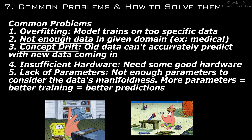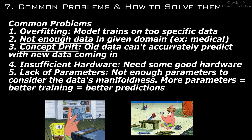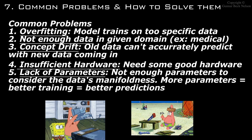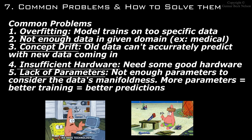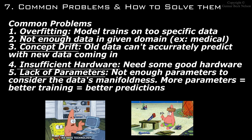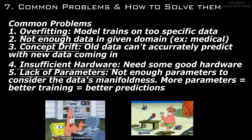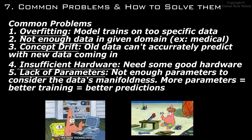Another aspect is the lack of parameters used to measure different heuristics that a neural network can predict. Typically, the higher the number of parameters a model has, the higher the accuracy and the more diverse outputs it can handle. The drawback is that it becomes more computationally expensive and takes longer to train — hence the linear relationship between hardware and AI model development.